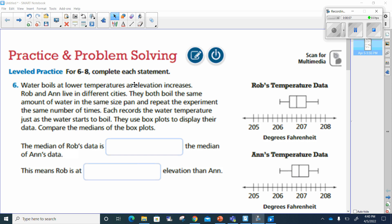Starts off with water boils at lower temperature as elevation increases. Okay, so that tells me the higher my elevation, the quicker my water's going to boil, right? Water boils at lower temperature as elevation increases.